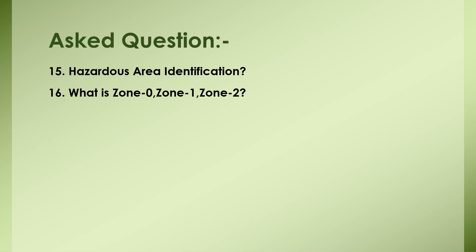Zone 1 is where explosive gas atmosphere is present between 10 and 10,000 hours. Zone 2 is where explosive atmosphere is present for less than 10 hours and not continuously. Normally in a refinery you will find Zone 2 installations predominantly.